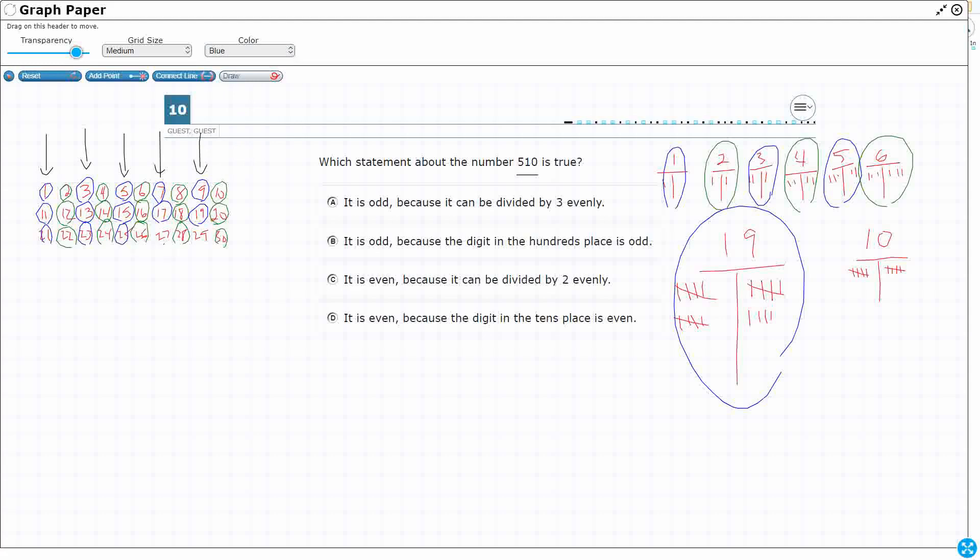Or, if you look at the ones digit, look at the ones digit here. If you have a 1 in the ones digit, if you have a 3 in the ones digit, a 5 in the ones digit, a 7 in the ones digit, or 9 in the ones digit, you're odd.